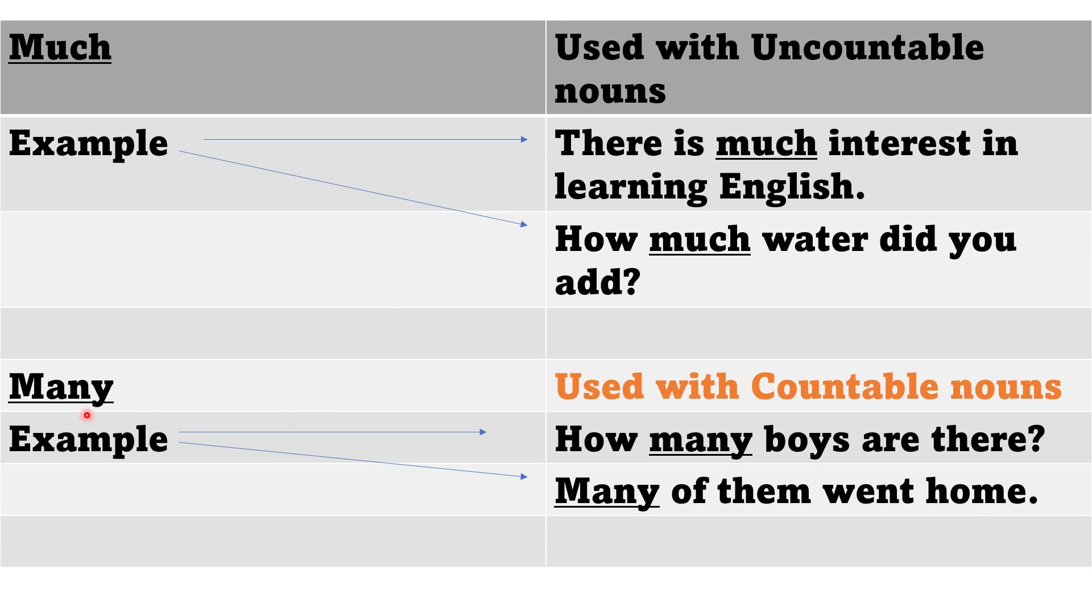The other word is many. It is used with countable nouns. Our examples are how many boys are there, and many of them went home, which means these many could be counted.